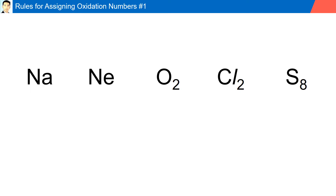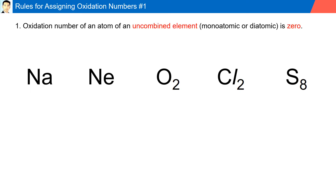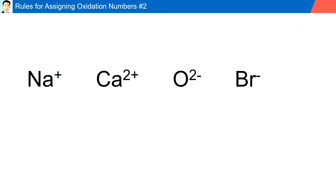Rule number one: the oxidation number for an atom of an uncombined element, monatomic or diatomic, is zero. For example, sodium as a free element has an oxidation number of zero; neon is zero; oxygen, a diatomic element, has an oxidation number of zero; chlorine, another diatomic, has an oxidation number of zero. Even sulfur, which is made up of eight atoms, also has an oxidation number of zero.